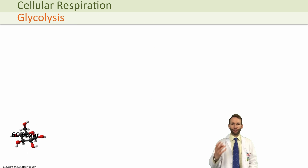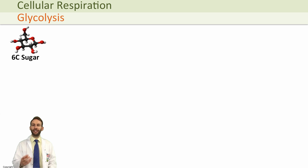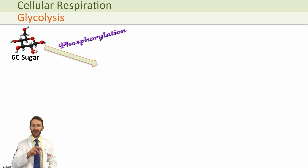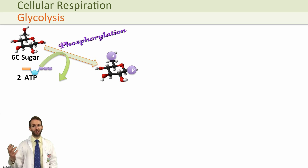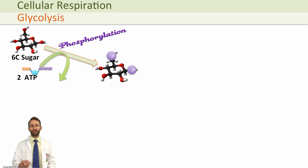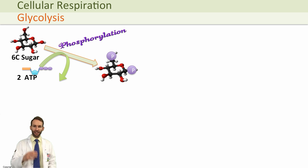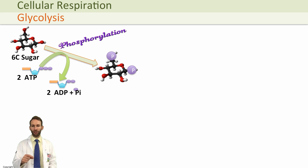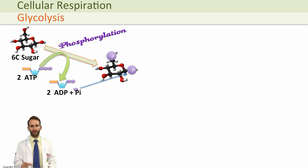We start with glucose, which is a six-carbon sugar. The first thing we do is a reaction called phosphorylation — this means we add phosphates. We actually get the phosphates from ATP, so whilst in aerobic respiration we want to make ATP, we need to use some ATP to start the whole process off. We're in a negative yield of ATP at this point. The phosphates move from ATP when it's broken down to ADP plus phosphate, and they join to the glucose molecule.